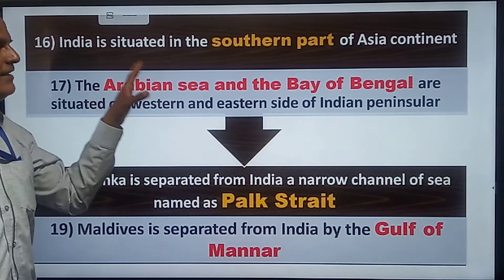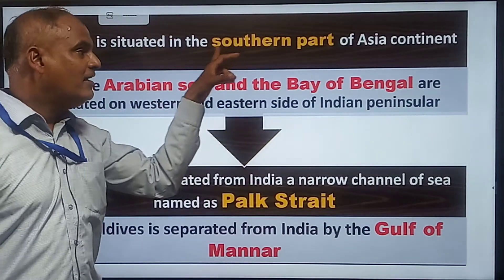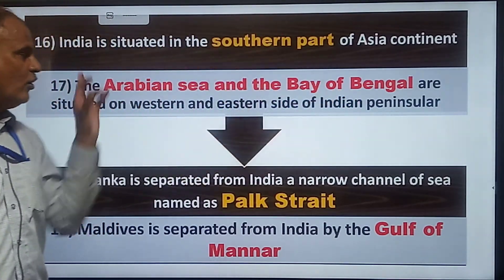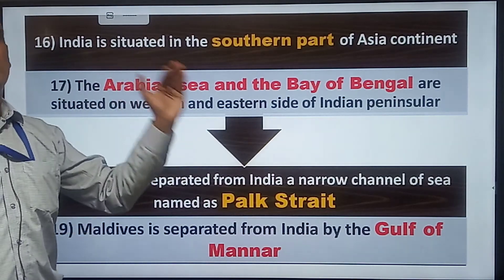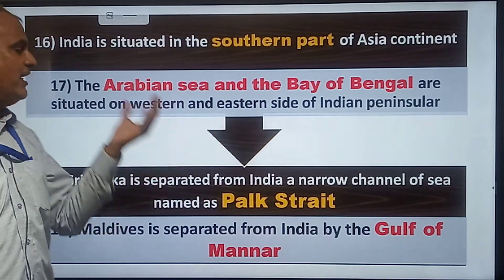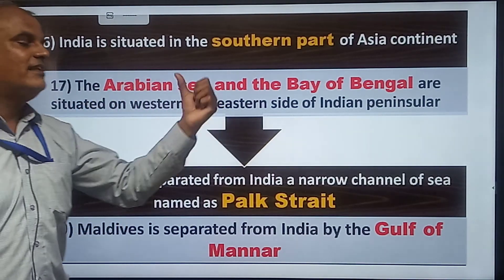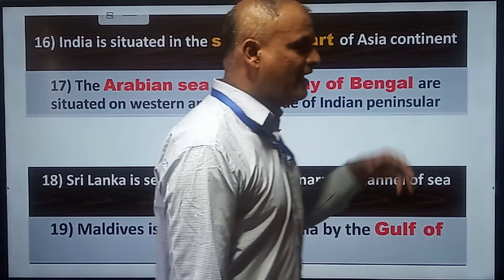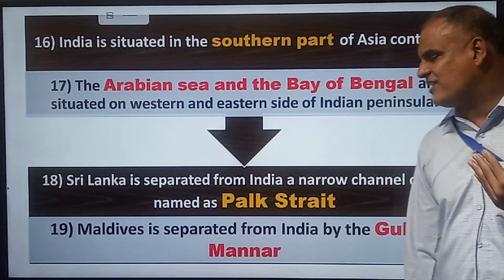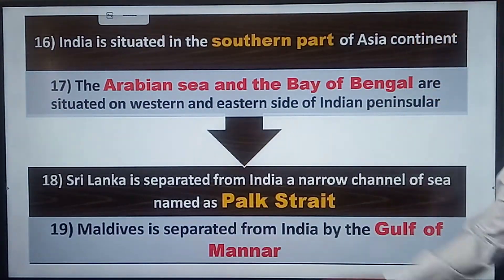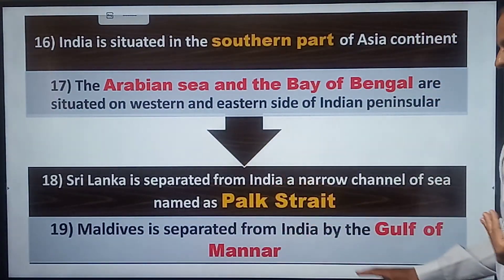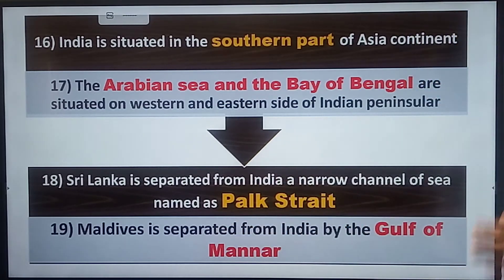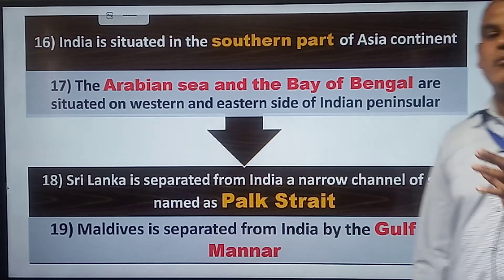India is in the southern part of Asia, bordered by the Arabian Sea on the west and the Bay of Bengal on the east. The channel between Sri Lanka and India is called Palk Strait, and the Maldives is separated from India by the Gulf of Mannar.